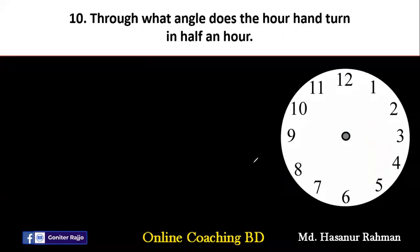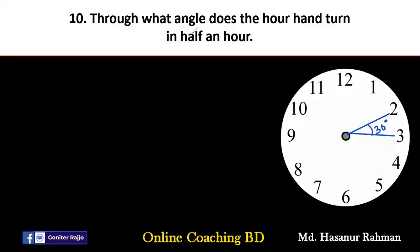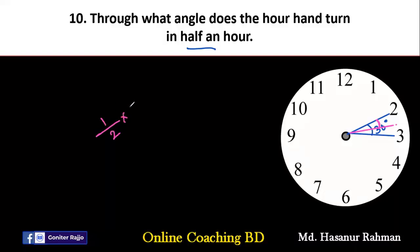Number ten says: through what angle does the hour hand turn in half an hour? From 2 to 3 it creates 30 degrees. Half an hour means it goes from 2 to 2:30, so it creates half of 30 degrees. That is 30 divided by 2, which equals 15 degrees. So the hour hand turns 15 degrees in half an hour.